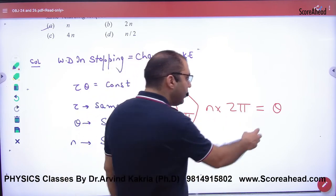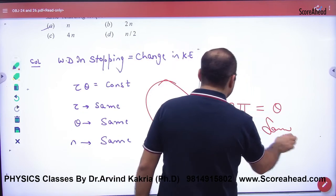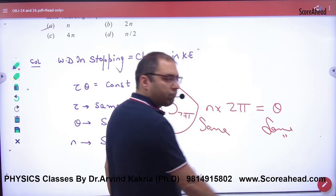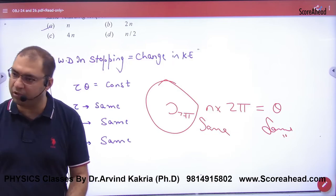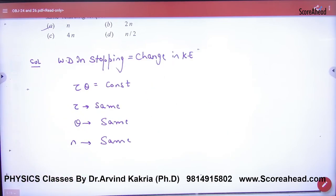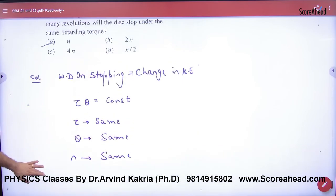When θ is the same, then n of both, then the number of revolutions will be the same. Do you understand? The next topic is the same. In the next class, we have to do that. But yes, I have used my old concept and solved it. Okay? Clear?